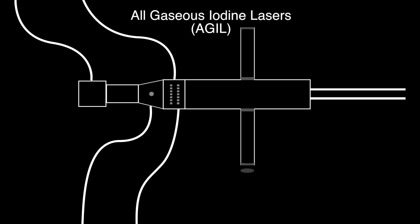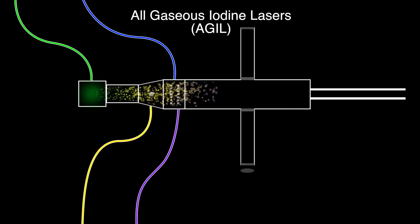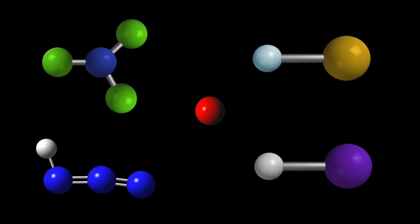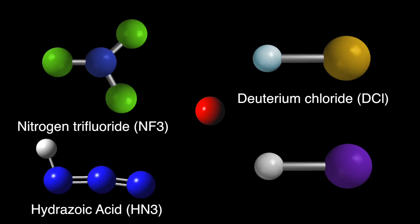We're going to be looking at all gaseous iodine lasers, or agile lasers to start with. The reason we're looking at these specifically is that because they're all gas-based, they could work in space, and due to the lightweight nature of the fuel they use, are most likely to be used in flight situations. In the first agile laser that was built, they used five gases for the reaction: Deuterium chloride, nitrogen trifluoride, gaseous hydrozoic acid, hydrogen iodide, and helium as an inert carrier.